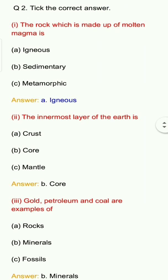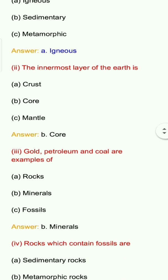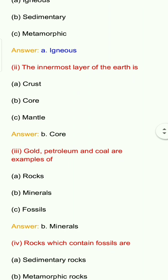Question 3: Gold, petroleum and coal are examples of? Options: A. Rocks, B. Minerals, C. Fossils. Answer: B. Minerals.